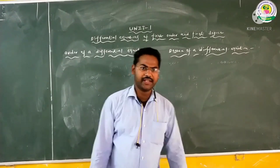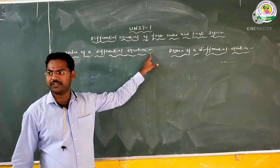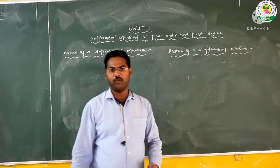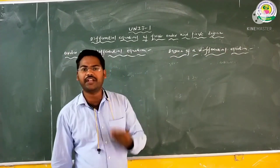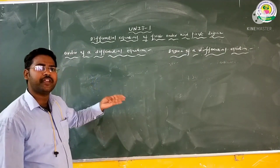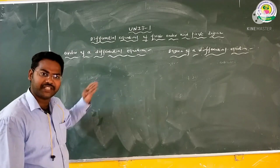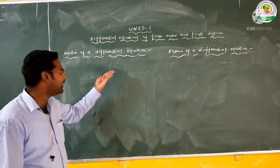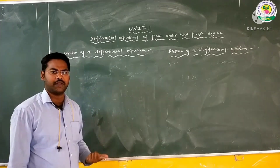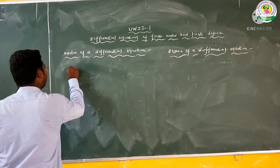Next definition: what is the order of a differential equation? A differential equation is said to be of a certain order if the highest derivative in the given equation defines that order. That is called the order of a differential equation.